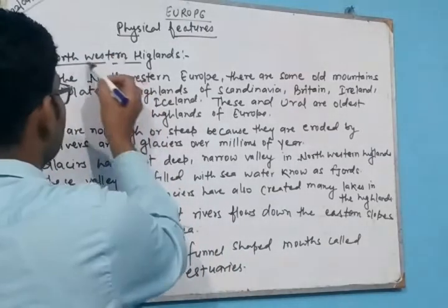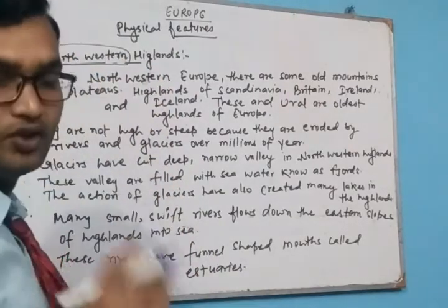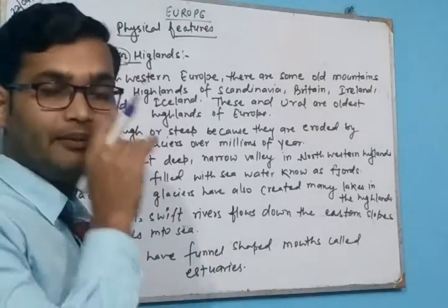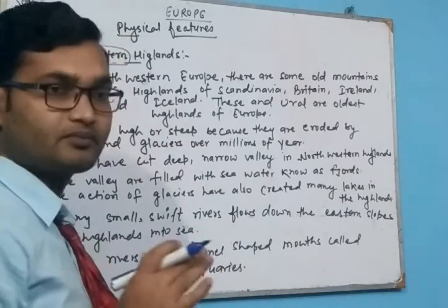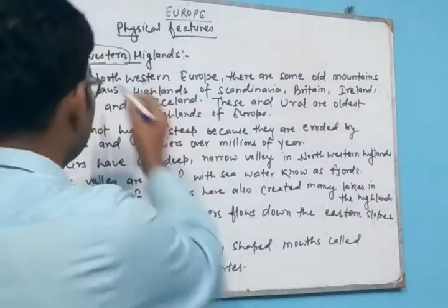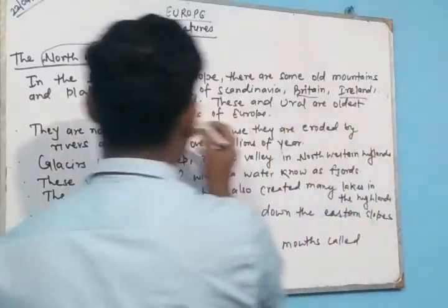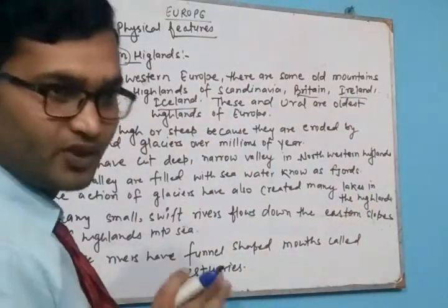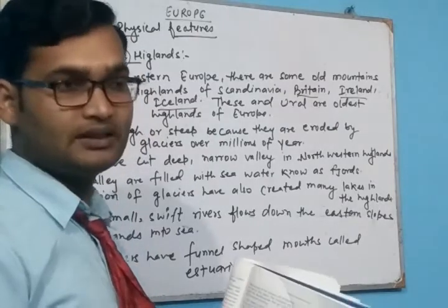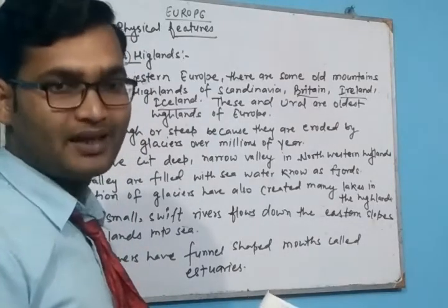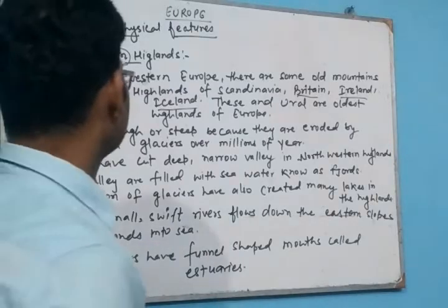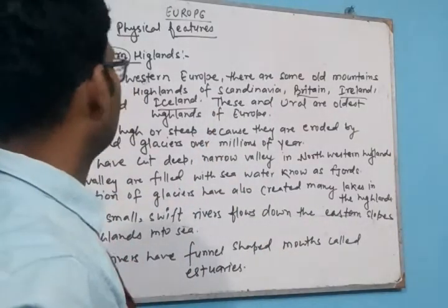The first is the North-Western Highlands. The north-western part covers the Scandinavian countries — the Netherlands, Norway, and Sweden. The western highland includes Britain, Ireland, and Iceland. These are the North-Western Highlands. These highlands are very old and have no sharp peaks, meaning they are totally eroded by different agents.